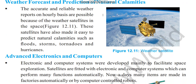Next, we have advanced electronics and computers. Electronic and computer systems were developed mainly to facilitate space exploration. Exploration satellites are fitted with electronic and computer systems which can perform many functions automatically. Nowadays, many items are made in factories automatically or by computer-controlled robots.